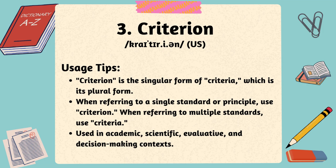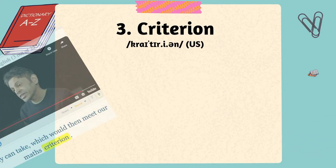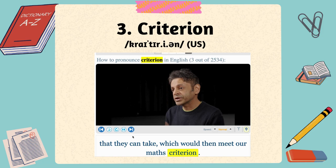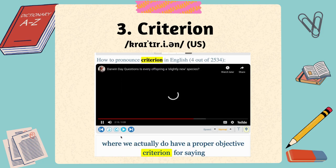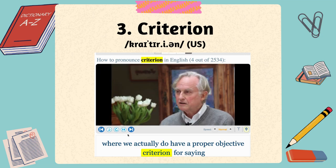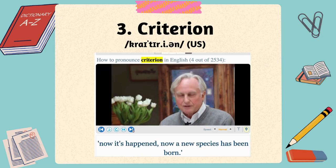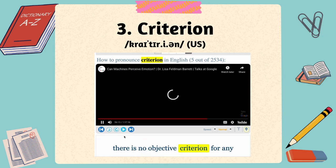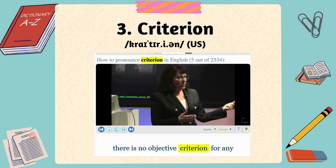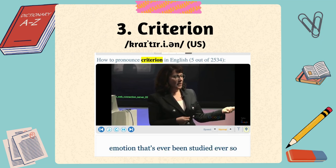Let's come to video samples for criterion on Youglish. Courses that they can take, which would then meet our maths criterion. Where we actually do have a proper objective criterion saying, now it's happened. And there is no objective criterion for any emotion that's ever been studied, ever.